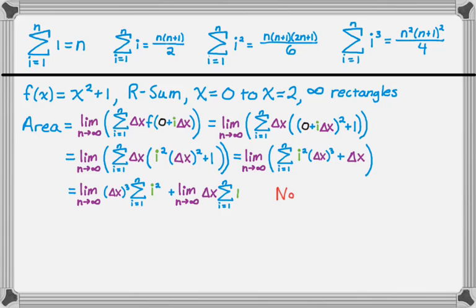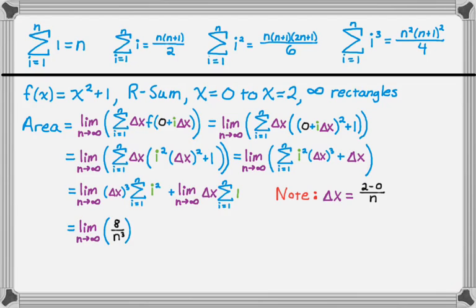Remember that delta x does not depend upon i — it's just 2 minus 0 over n, or 2 over n. So I'm going to use the formulas above and replace all the delta x's with 2 over n. I get the limit as n approaches infinity of 8 over n cubed — because I cubed it — times the sum of i squared, which is n times n plus 1 times 2n plus 1, all over 6.